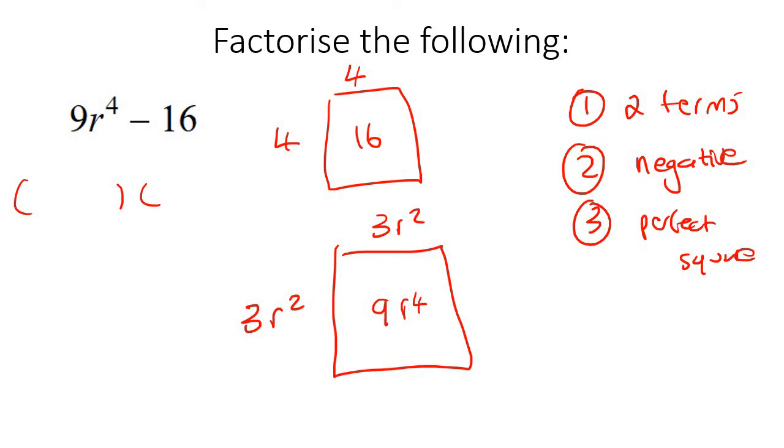So what we do is we put a plus in the one and a minus in the other, and then you just put those side lengths of the squares, like that. Done.